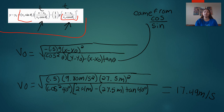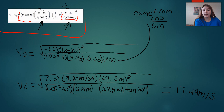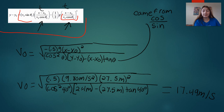Once we substitute everything in, we're substituting t into the y minus y naught equation. So y minus y naught is equal to v naught sine of theta times time, which is x minus x naught all over v naught cosine theta, minus one half g times time squared. This gives us v naught is equal to the square root of negative one half g times x minus x naught squared, all over cosine squared of theta times y minus y naught minus x minus x naught times tangent theta.